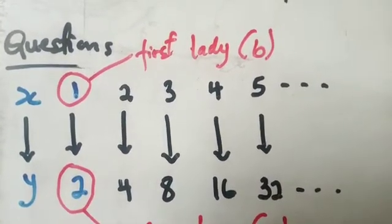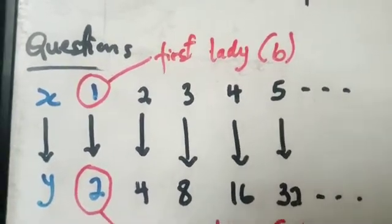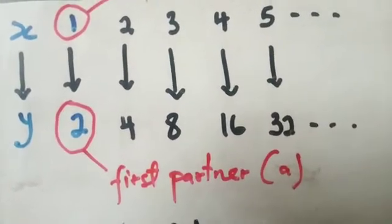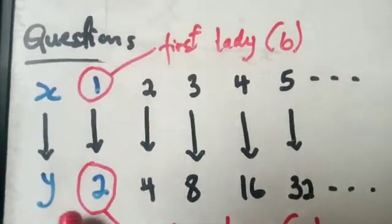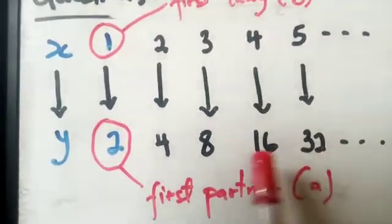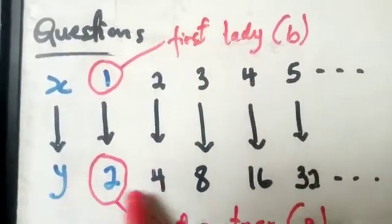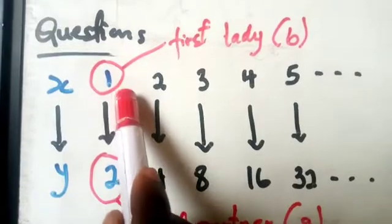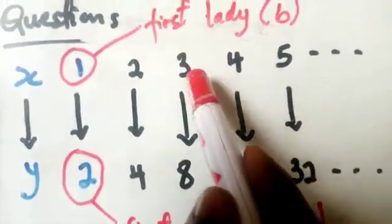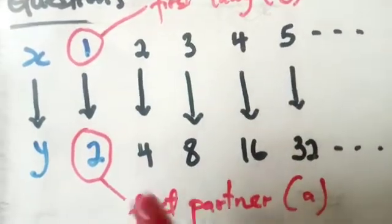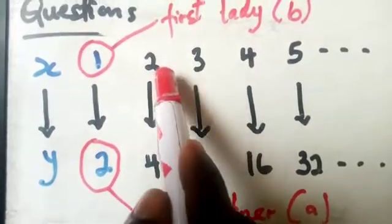The feature that helps us identify an exponential mapping is the common ratio. To identify an exponential mapping, you must be able to find a common ratio. In our example, the ladies (x-values) are on top — 1, 2, 3 — and the partners (y-values) are below — 2, 4, and so on.